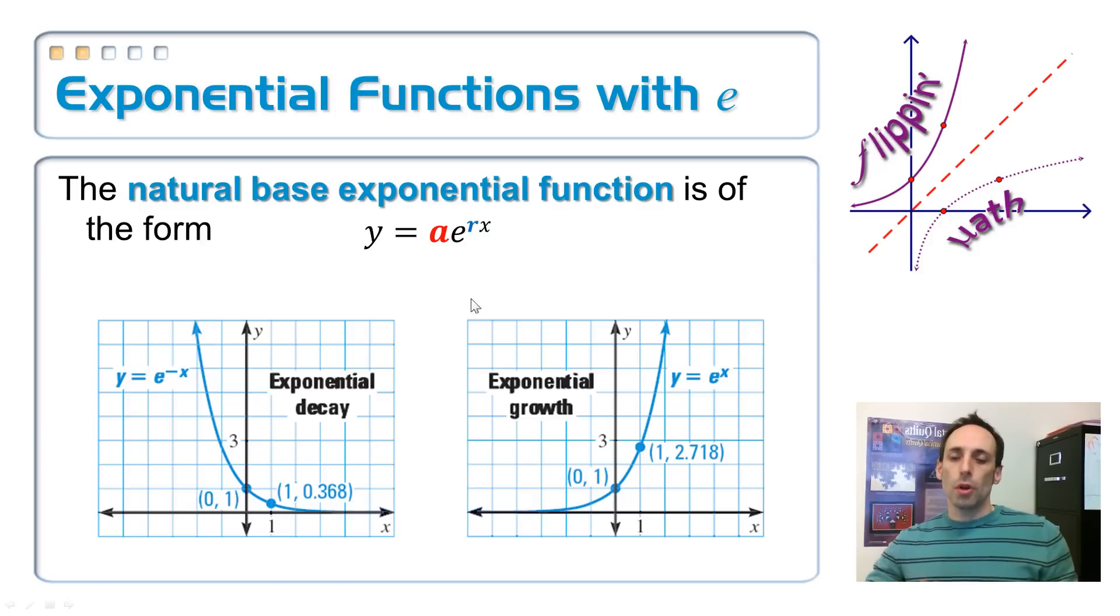So on the flip side of it, if the exponent is negative, then we have a decay function. And so everything is just basically flipped over the Y axis. So still at the zero power, my Y intercept is one. And then to the first power, if this thing is negative already, it's basically to the negative one power, and there's that .368, right, .4-ish. Exponential growth, exponential decay.